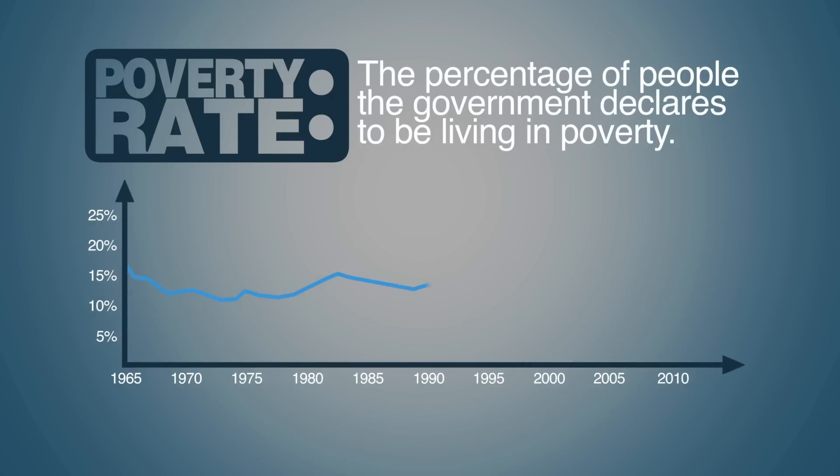In 1965, President Lyndon Johnson famously declared a war on poverty. Half a century later, the poverty rate – the percentage of people the government declares to be living in poverty – has barely changed. Why?